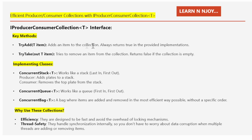The two key methods are TryAdd and TryTake. TryAdd(T item) adds an item to the collection and always returns true in the provided implementation — it works as the producer. TryTake tries to remove an item from the collection and returns false if the collection is empty — it works as the consumer.